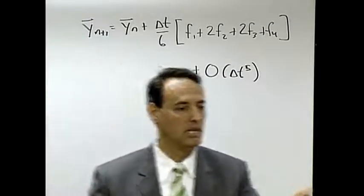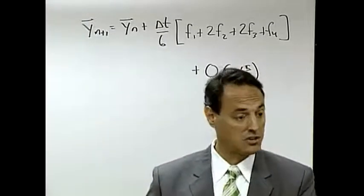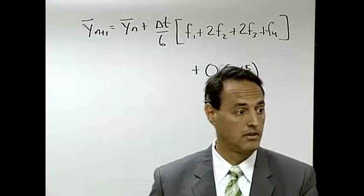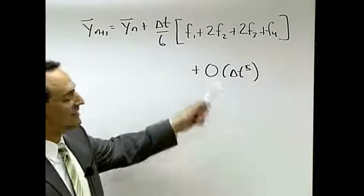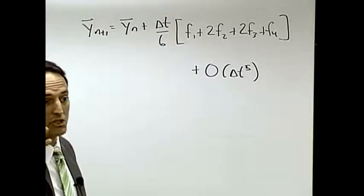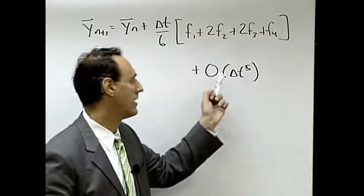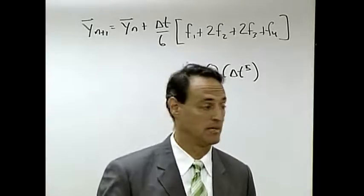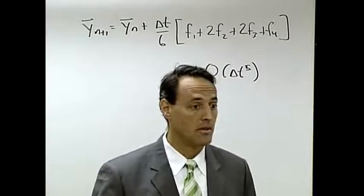So whatever your step size happens to be, you take that small step size to the fifth power, and then there's the error. So if I take step size of 0.01, that's 10^-2, every step I take 10^-10 is my guaranteed accuracy. That's pretty amazing, people like this.